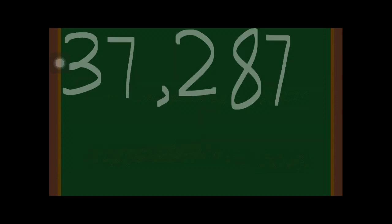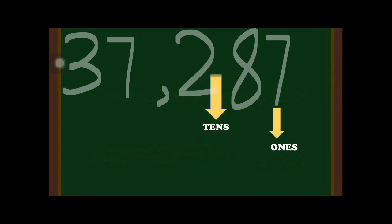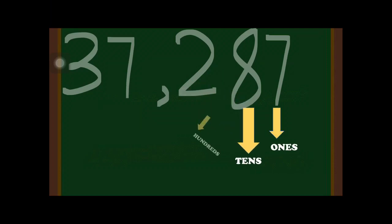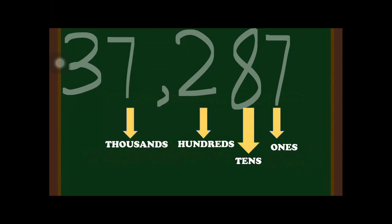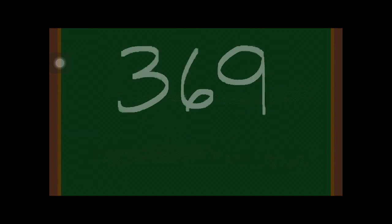For another example, we have 37,287. Digit 7 is the first from the right, so it is in the ones place. Digit 8 is in the tens place. Digit 2 is in the hundreds place. Digit 7 is in the thousands place, and digit 3 is in the ten thousands place.